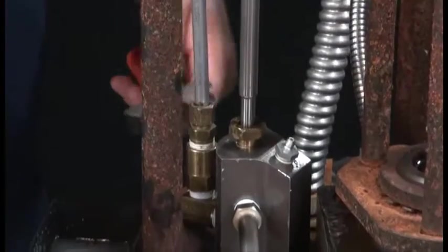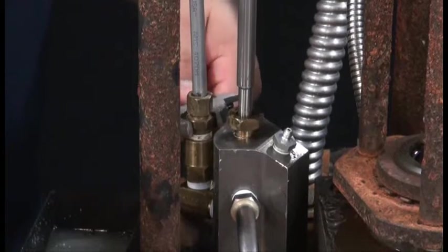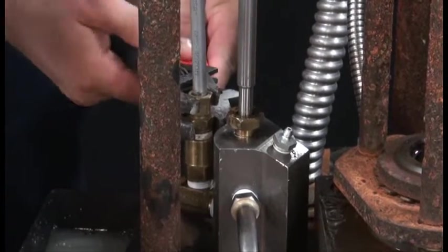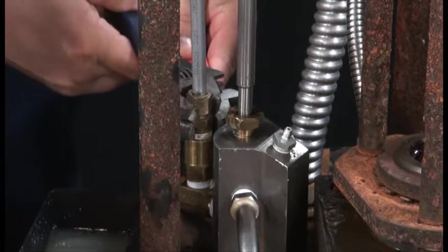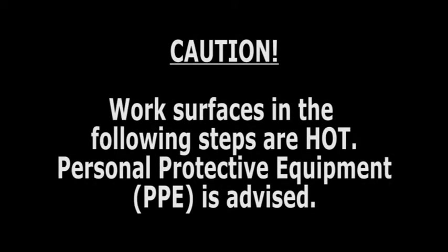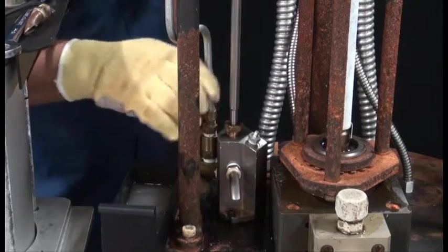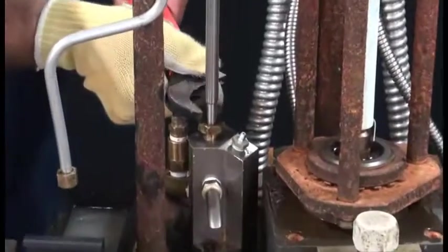Use appropriate wrenches to loosen the compression nut for the air inject tubing. Note that personal protective equipment should be used for the remaining steps. Remove the air inject tubing from the purge block assembly and set it aside.